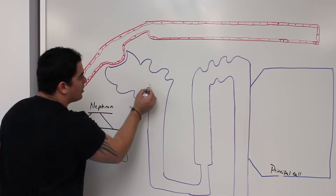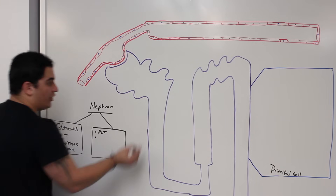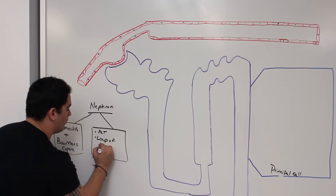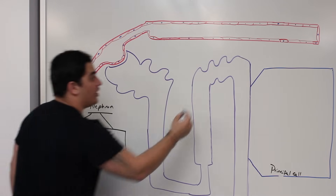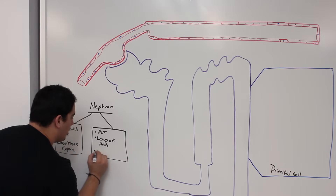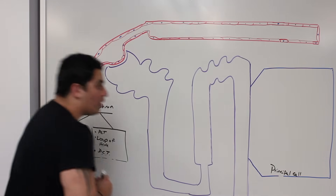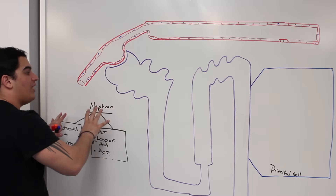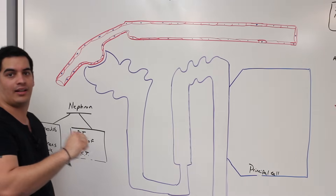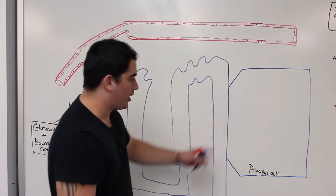You can see the proximal convoluted tubule here — that's the coiled part. Then there's the loop of Henle. And over here is the distal convoluted tubule. That's what the nephron is. But what we're focusing on is the collecting duct — many nephrons empty their filtrate into the collecting duct, and that's where ADH is focusing.